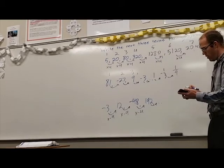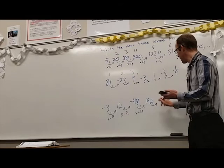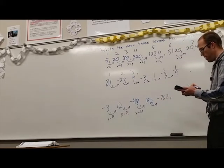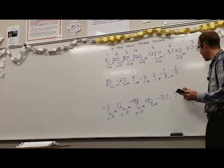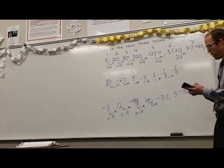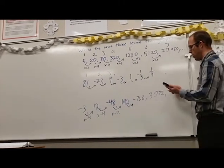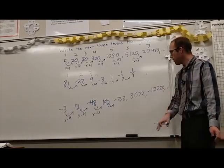Now 192 times negative 4 gives us negative 768. Multiply that by negative 4 and we get positive 3072. Multiply that by negative 4 again and we get negative 12,288 and if I needed to keep going I could continue that pattern.